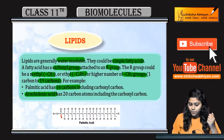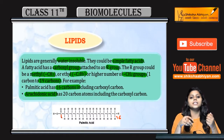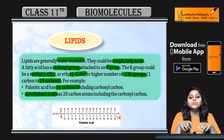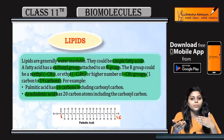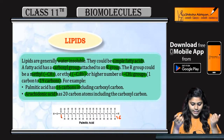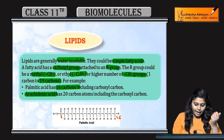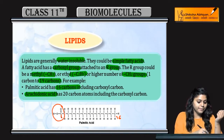16 carbon kis me hootay hain? Palmitic acid me - saturated, means koi double bond present nahi hai, and kya present hai - carboxylic acid group.